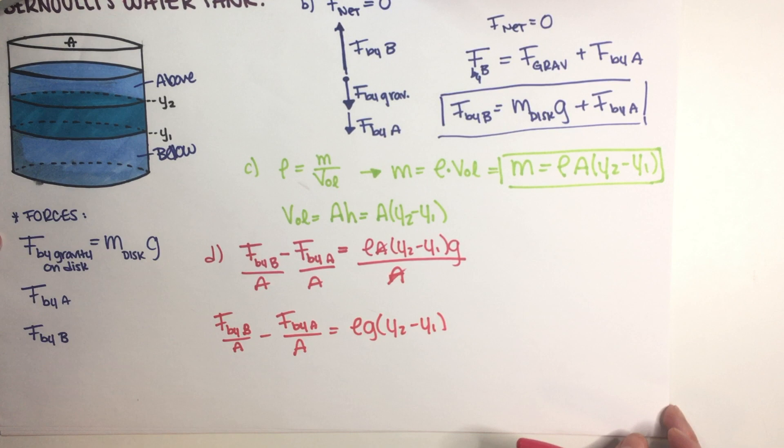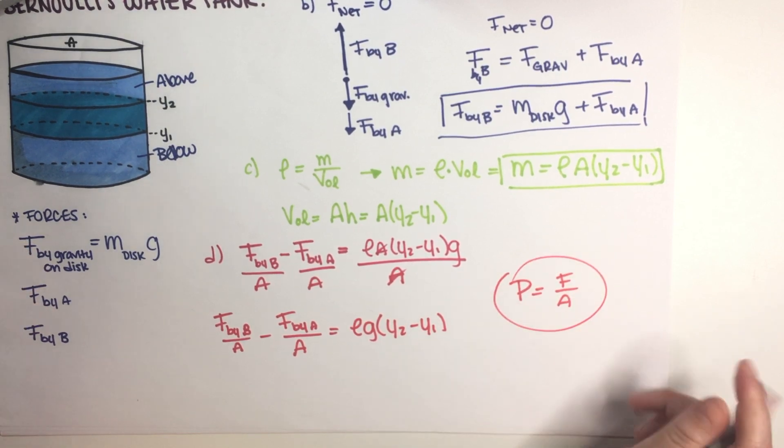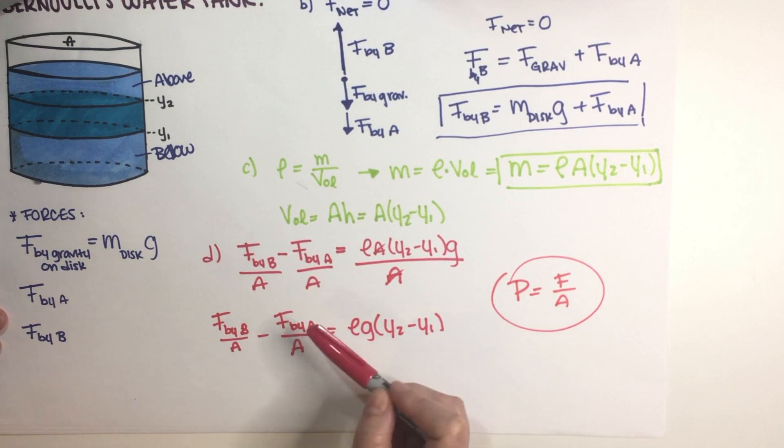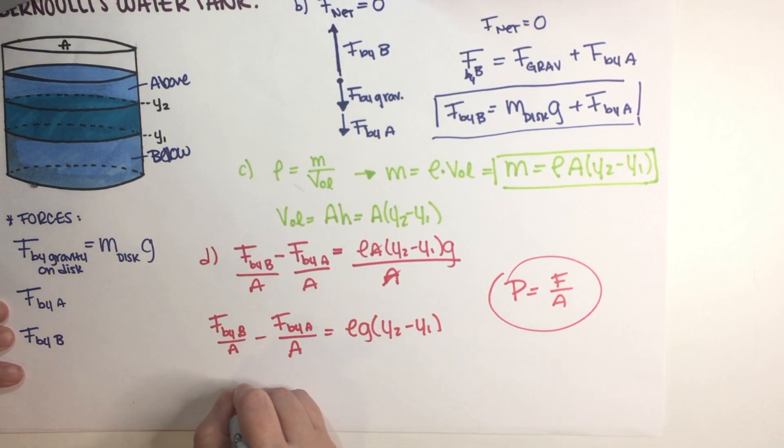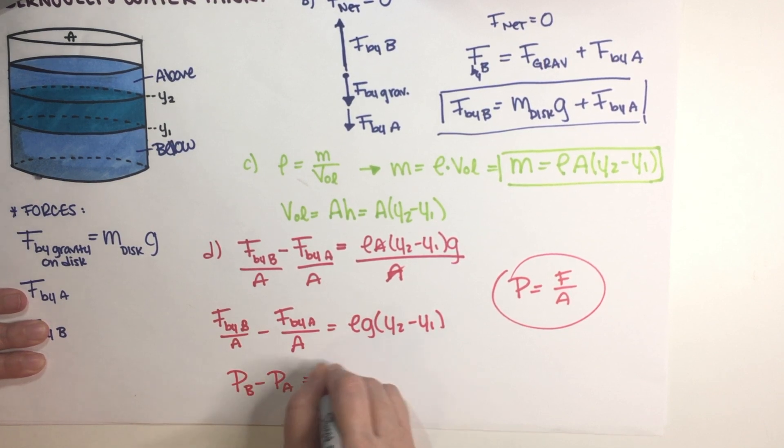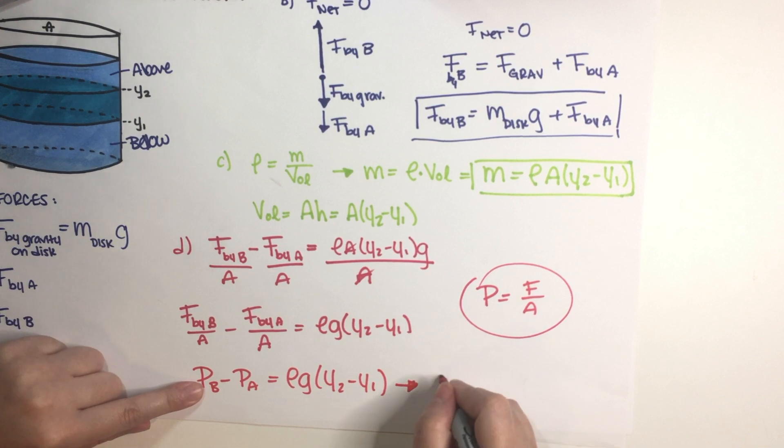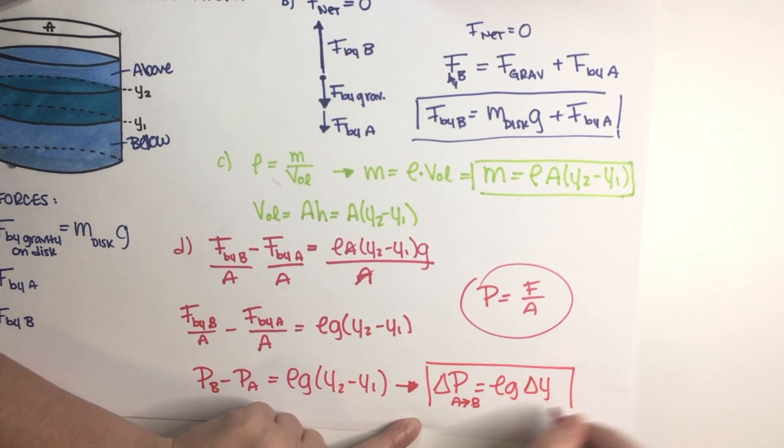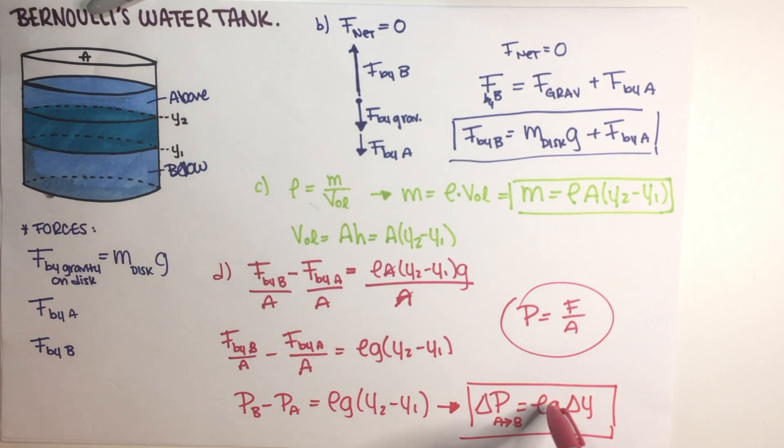And then it says recalling the relationship between pressure force and area which is pressure is equal to force divided by area, show that this is the Bernoulli equation. Well we're pretty much there because this is a force divided by area so this is pressure at point B, this is force divided by area so this is pressure A, and then this is just the term in the Bernoulli equation. This is just a delta y so our final answer is PB minus PA is equal to rho g delta y. And this is the Bernoulli equation or how we would have ended up with this so we do know that this answer is correct and this basically is the end of the problem.